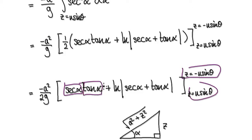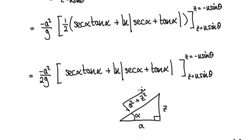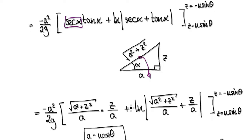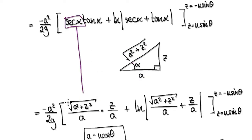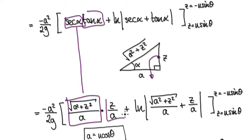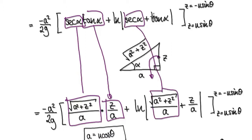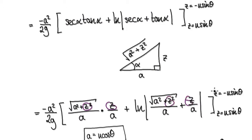Now we need to convert everything back into the Z realm, because we don't want the answer in terms of alpha. We have alpha here and alpha here, so convert all the alphas back to Z. Recall the right-angle triangle: secant is hypotenuse over adjacent, which is root of A squared plus Z squared, all over A. And tan alpha equals Z over A.